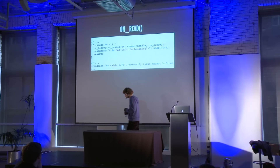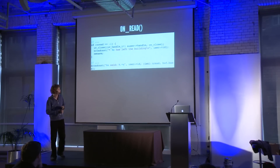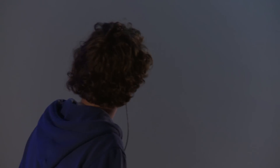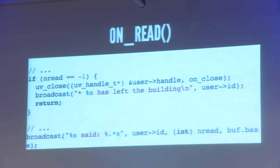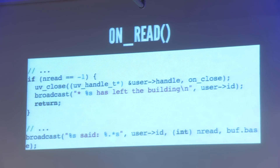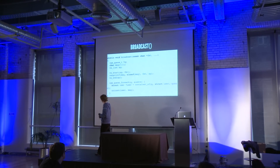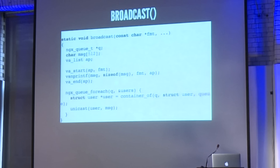This is the onRead callback. It does two things: one, it handles network errors — if that happens, we close the connection and broadcast a message saying the user has gone. If all goes well, however, we have received some data from the user, and what we do is simply broadcast it to all other users, which is of course the basis of a chat app. This is the broadcast function itself — it formats the message and sends it to all individual users that are currently connected.